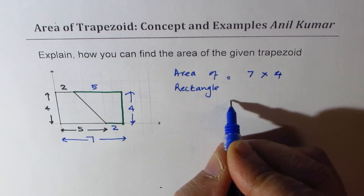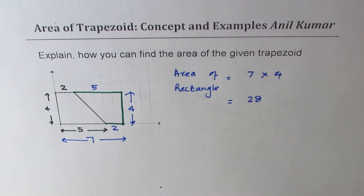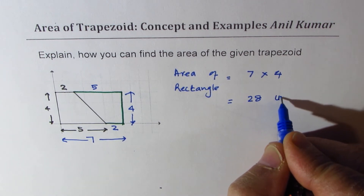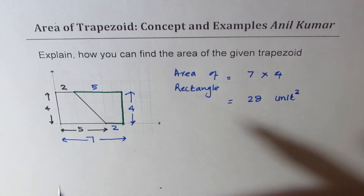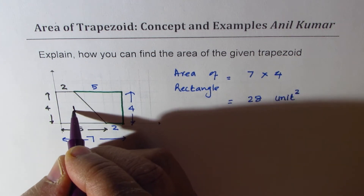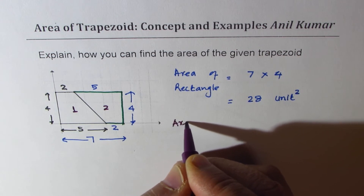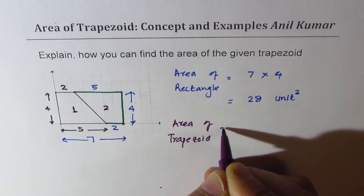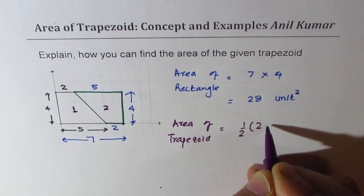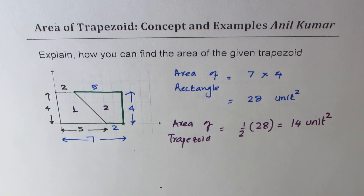So the area of the rectangle is seven times four, which is equal to 28 square units. So that is the area. Units are not given, so we'll just write unit square. Now, there are two trapezoids in this — one trapezoid and the other one, both are exactly the same. So what is the area of the trapezoid? It is half of 28, and that gives you 14 square units.